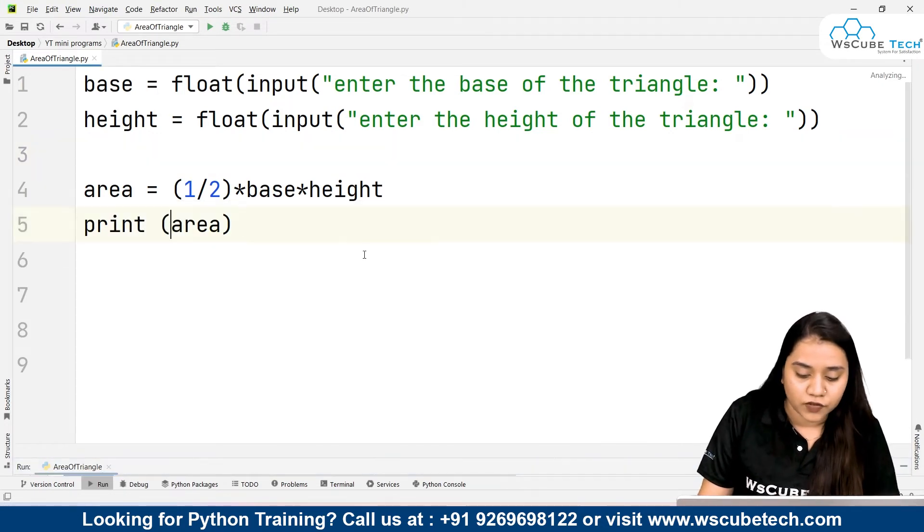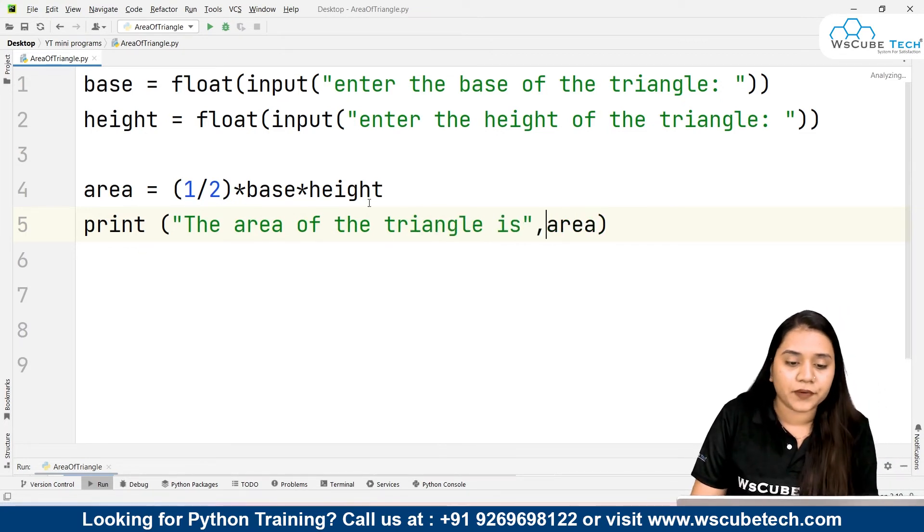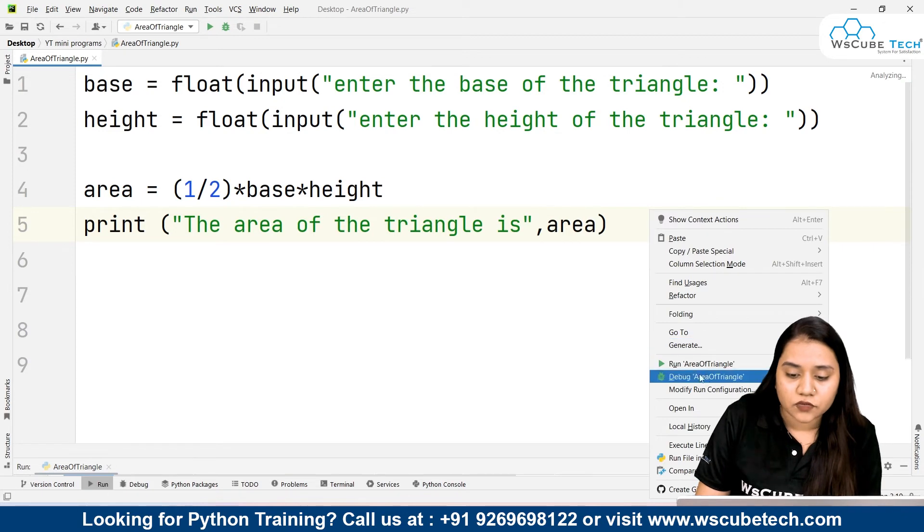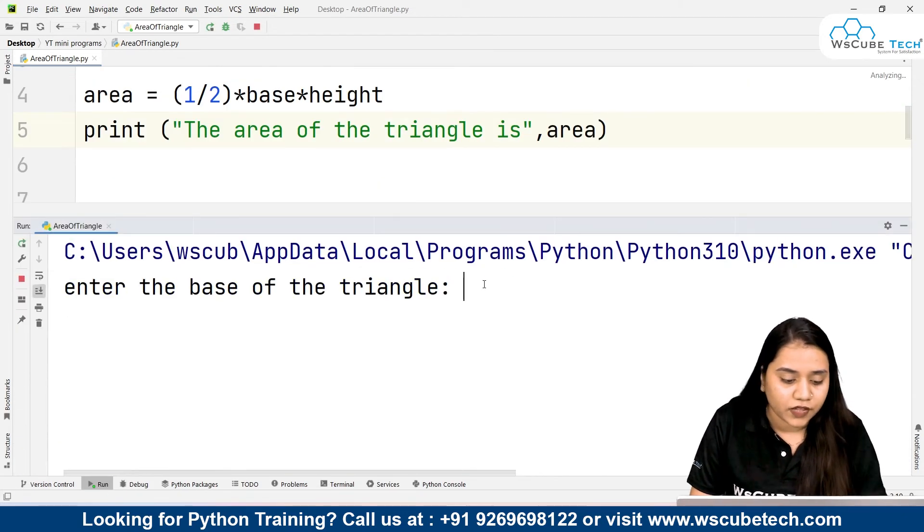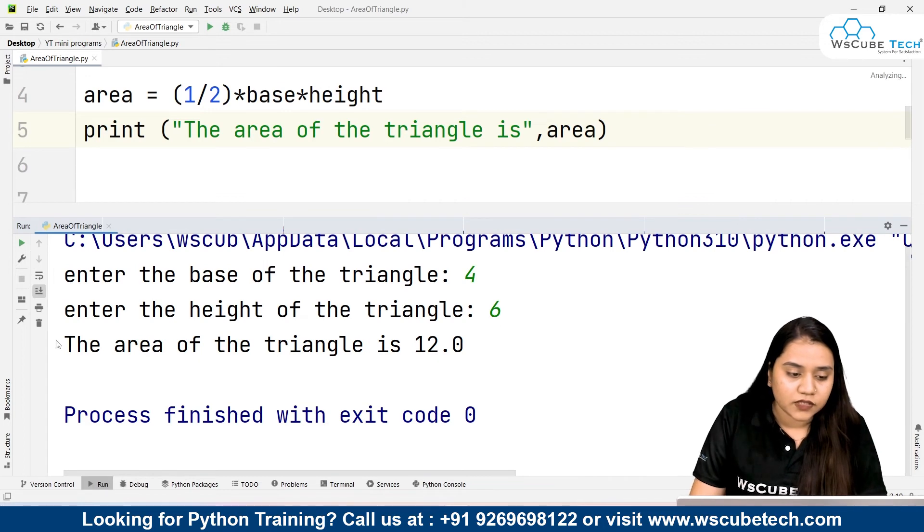If you want, you can add quotations saying 'the area of the triangle is', enclose the quotation, put a comma to separate this string with the variable. As soon as we run it again and write any value, I'll give the value again 4 and 6, and it gives me 'the area of the triangle is 12.0'.